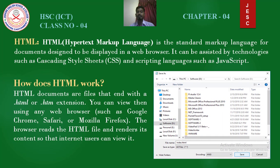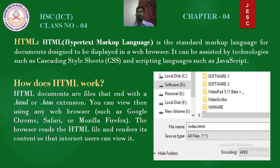After writing the HTML code, we have to save the HTML document. We have to select a name and save the document with the extension .html or .htm. After that, we have to select the desired location where we want to save the HTML file. Here the file name is index and the extension is .html.